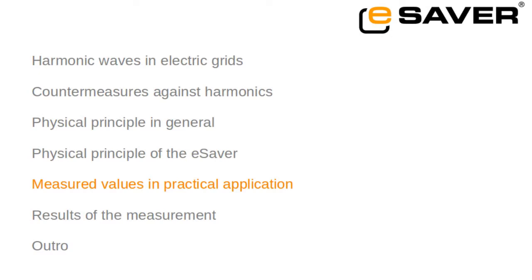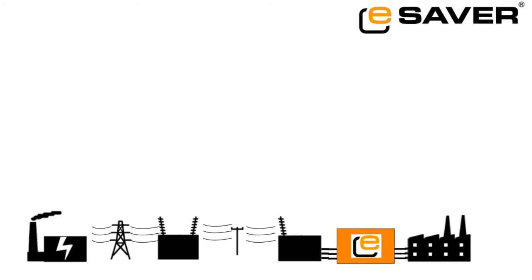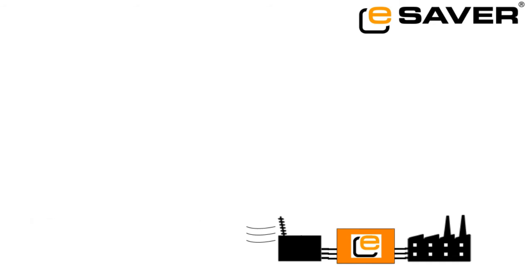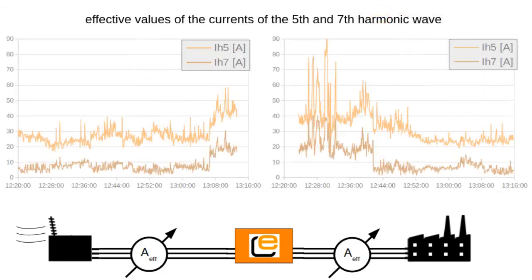So far we have covered theory, but what does all this look like in practice? Let's look at measured values from a field test. We have measured the harmonics at a customer's plant. This was done in front of the eSaver and after the eSaver.